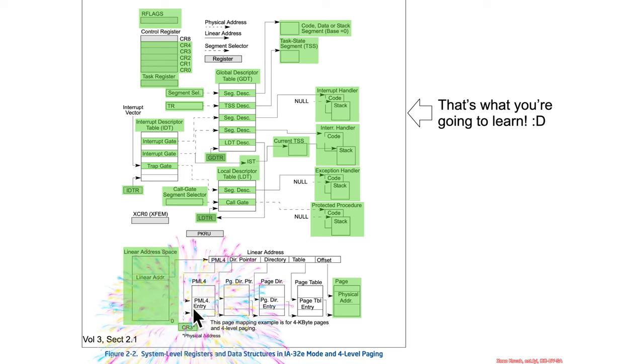Control register 3 reappears down here. It's actually going to be the base where the page tables start being indexed from.